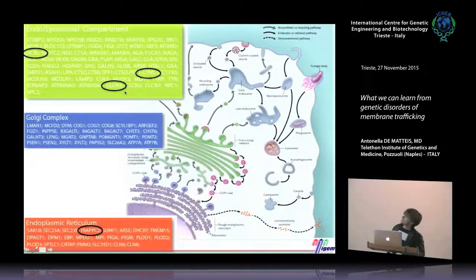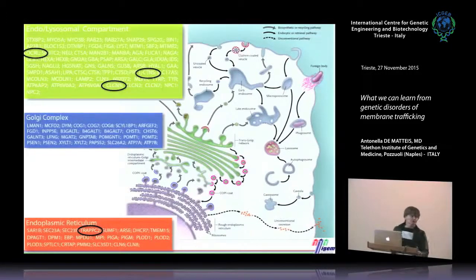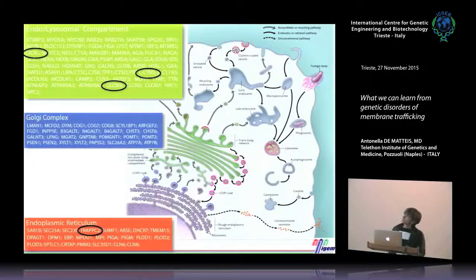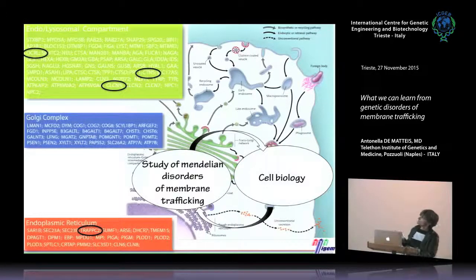We are studying a few of these genes because we are really convinced that by studying these disorders, not only can we understand more about the pathogenesis of the disease and possibly find correctors, but also because by studying these gene products in disease models we can understand much more about their real function. This is exactly how we see the study of Mendelian disorders of membrane trafficking in relation to cell biology — it is truly a mutual benefit.